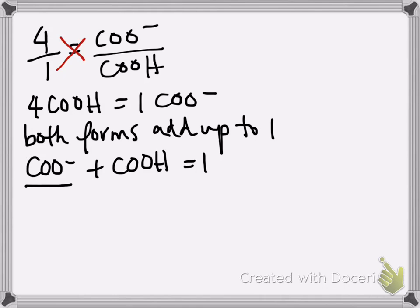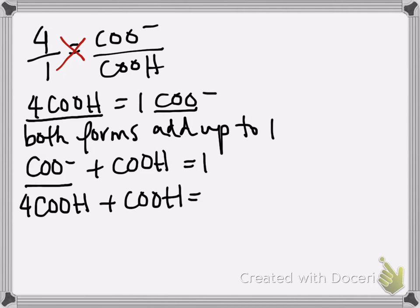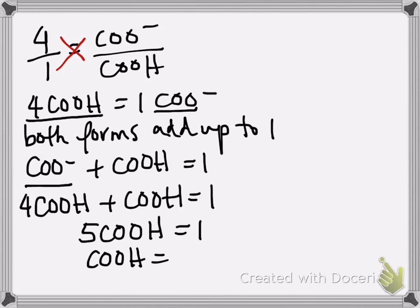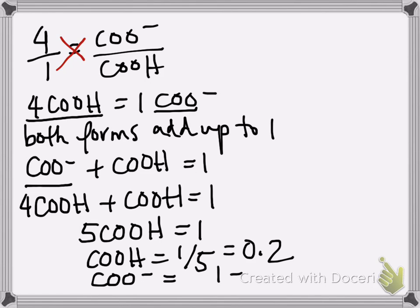You have COO⁻, and you know COO⁻ is equal to 4 COOH, so you can plug that in. Our goal is to turn everything into just one unknown so we can solve for the one variable. Now we can do the algebra: this turns into 5 COOH equals 1, so the amount of COOH is 1 over 5, or 0.2. That means the amount of COO⁻ is 1 minus 0.2, which is 0.8.